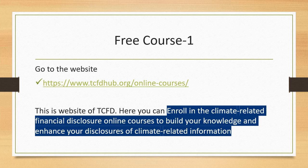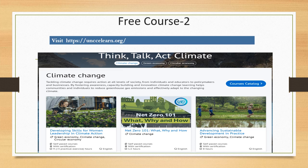The next website is unccelearn.org, where you will find many courses — most are related to climate, but there are also courses on human rights and related areas. You can learn about concepts like net zero in a very simple way. After completing the courses and writing a test, you will receive a certificate. Both websites discussed so far are not employment-oriented, but they will help you develop a decent understanding of key areas of ESG, sustainability, and climate change.